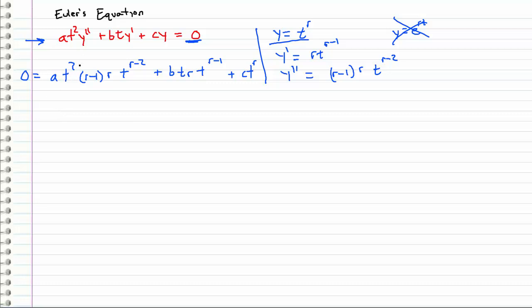So we can see that we have a t squared and a t to the r minus 2. We can actually combine those and what happens is this comes over and gets rid of this negative 2, and this comes over and gets rid of this negative 1. We've basically gotten this in terms of t to the r. So let's go ahead and rewrite that.